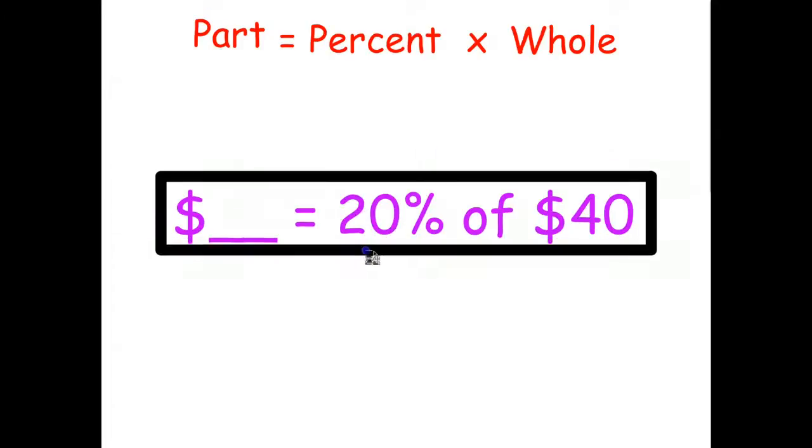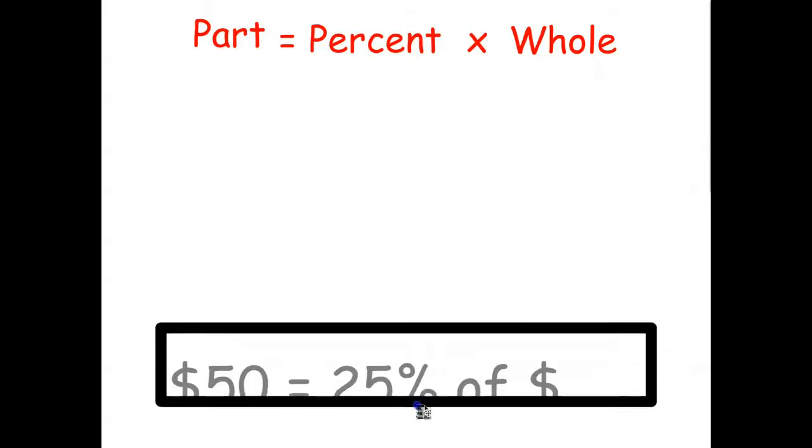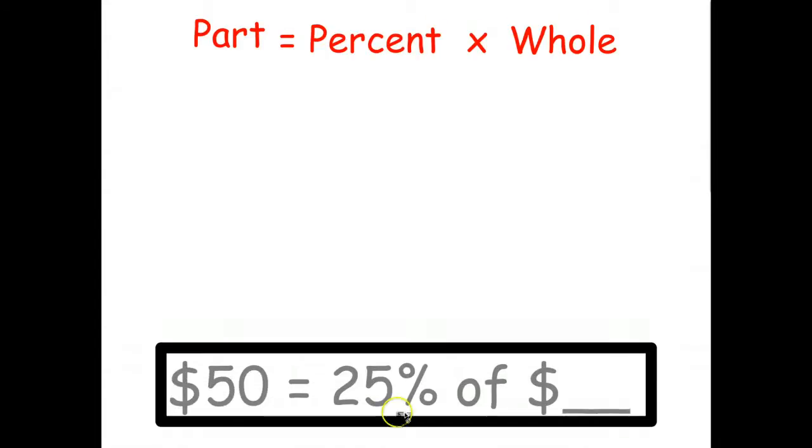So one of the types of equations you can solve with the formula is finding the part. You can also use it to find a missing percent. So $30 is what percent of $60? And the third type of question you can solve is finding the whole. So in this case, $50 is 25 percent of what whole amount?